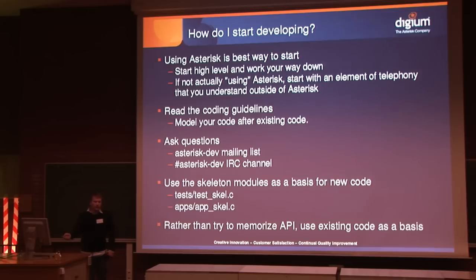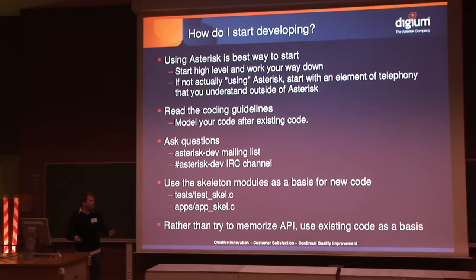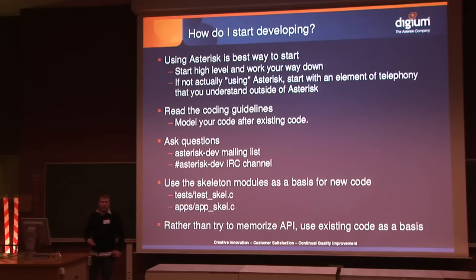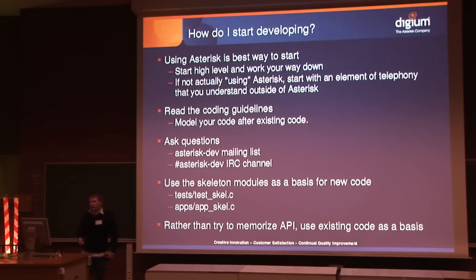Now that you have a brief understanding of the directories within Asterisk, how do you start? As I said, I think using Asterisk is a great way to start. Begin with applications, dial plan functions, and such that you already understand, and try working down from there to the core — it's a slow process but the best way to do it. If you decide not to use Asterisk first, start with an element of telephony you're already familiar with. For example, if you're a SIP guru and want to add a SIP feature you know is missing, just start looking in the SIP channel driver and add your code directly there.